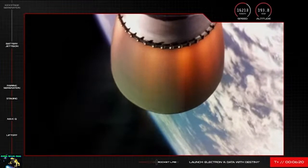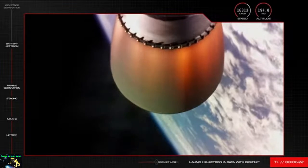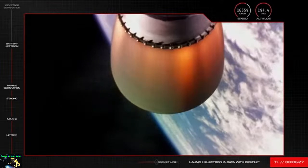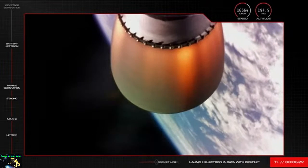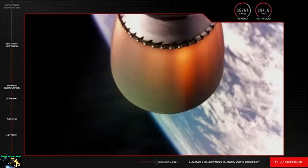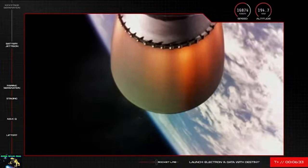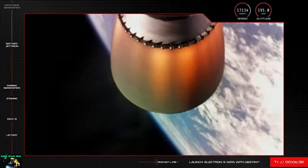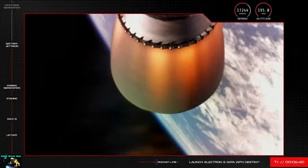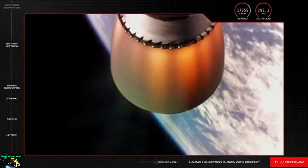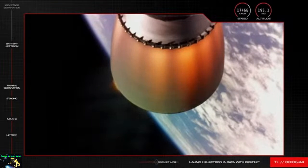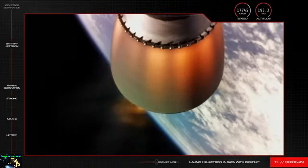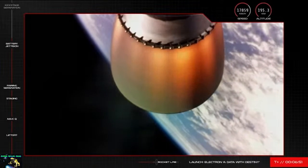Coming up in the next couple of minutes will be the second engine cutoff on the second stage or SECO. This maneuver follows pretty much the same procedure as main engine cutoff where the Rutherford engine on the second stage will shut off ahead of final separation of the vehicle between the second stage and our kick stage. There will be a bit of a gap between that final separation and payload deployment as this stage separation places the kick stage in an elliptical orbit of earth first. I'll explain what happens after that point once we receive confirmation from mission control first of SECO and stage separation.